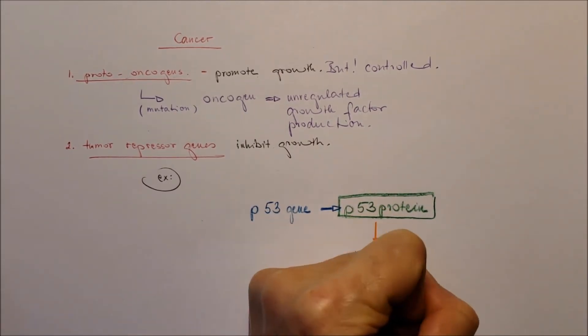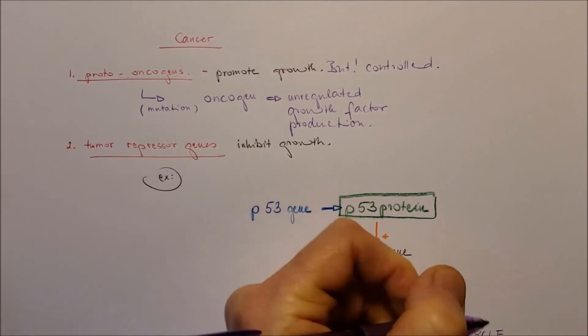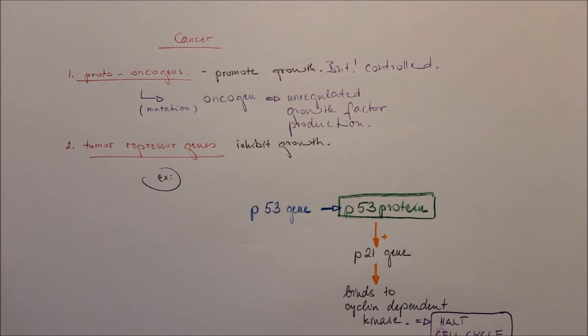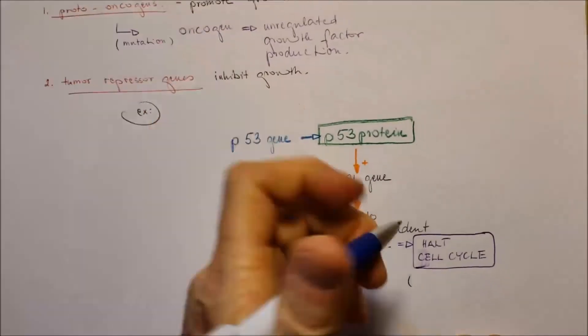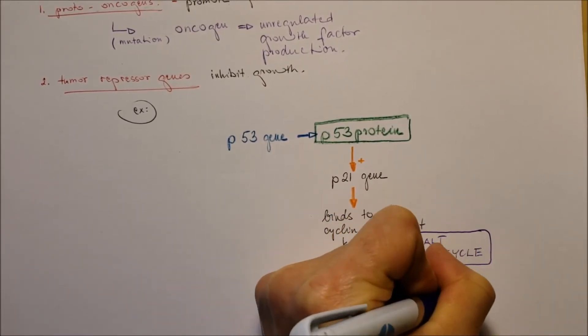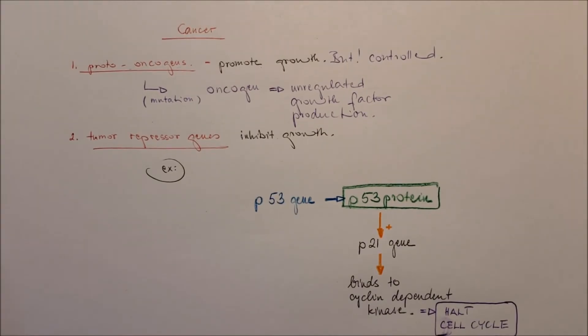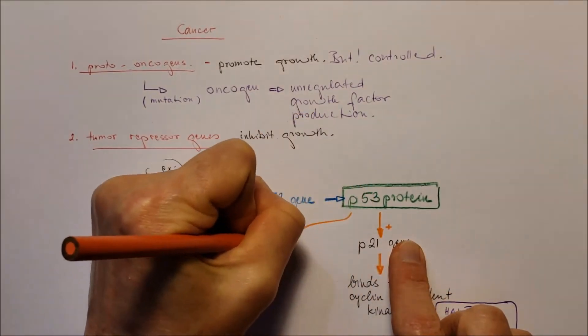If it binds to it, it will halt the cell cycle. And during that halt, the DNA repair process can be finished. That's why it's really important. The tumor suppressor gene slows down the cell cycle, not to let the cell rush through the different checkpoints.